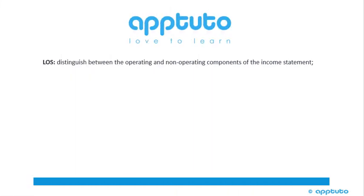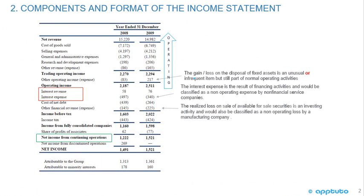This LOS distinguishes between the operating and non-operating components of the income statement. We're going through the financial statements for Danone, from the CFA Level 1 reading on the income statement. There was an example, so we're sticking with this example.